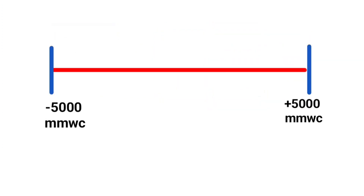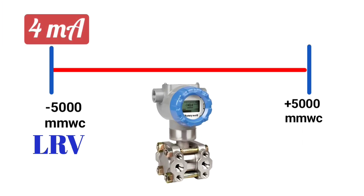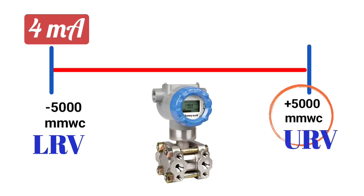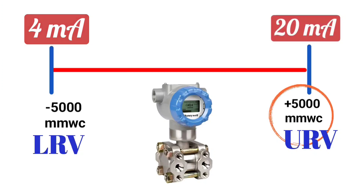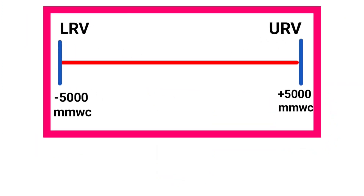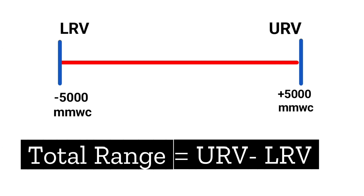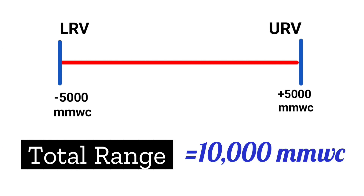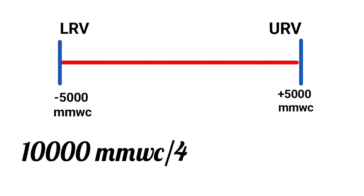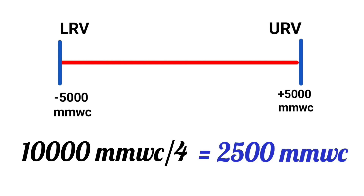Let's take one more range: minus 5000 mmWC to plus 5000 mmWC. We will calculate this. Its LRV is minus 5000 mmWC, so at minus 5000 mmWC the transmitter output will be 4 milliampere, and at plus 5000 mmWC the transmitter output will be 20 milliampere. From minus 5000 to plus 5000 mmWC, the total range — using the formula: total range equals URV minus LRV — will come to 10,000 mmWC. Now divide 10,000 mmWC by 4, which gives 2500 mmWC.